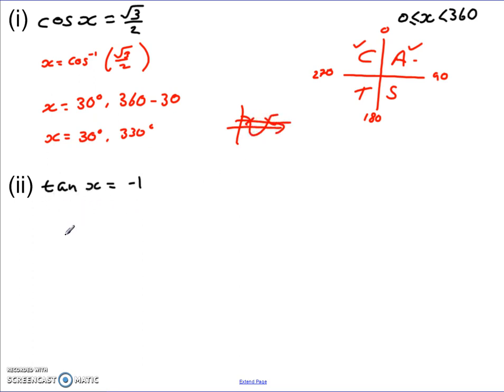Tan x, it was negative 1. Well, in this case, we have to go back to our CAST diagram and figure out where our solutions lie for this one. So we set it up just as normal with our numbers there in our CAST. Now, it's tan x, but it's when tan is negative. So we have to find out what regions it's negative in.